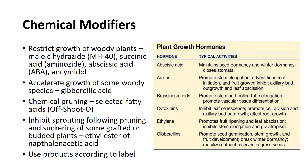Gibberellic acid accelerates the growth of some species of woody plants. Selected fatty acids can be used as chemical pruning agents, whereas the ethyl ester of naphthalene acetic acid has been used to inhibit sprouting following pruning and suckering of some grafted and budded plants — for example, crabapples.